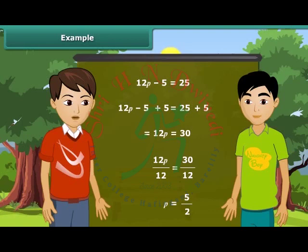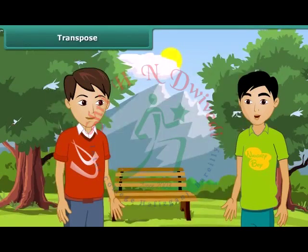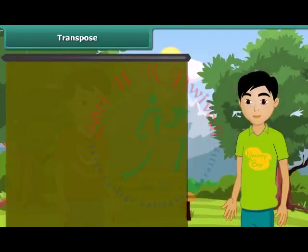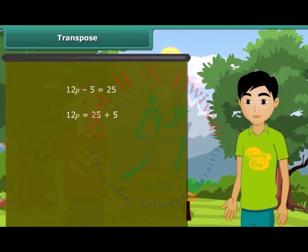What is transposing? Come, I will explain you. Transposing means changing side. For example, in this example, we have changed the side of 5. And when we transpose any number, we change its sign. Plus becomes minus, multiplication becomes division. And now by transposing 12, P becomes 30 divided by 12, which is equal to 5 upon 2.